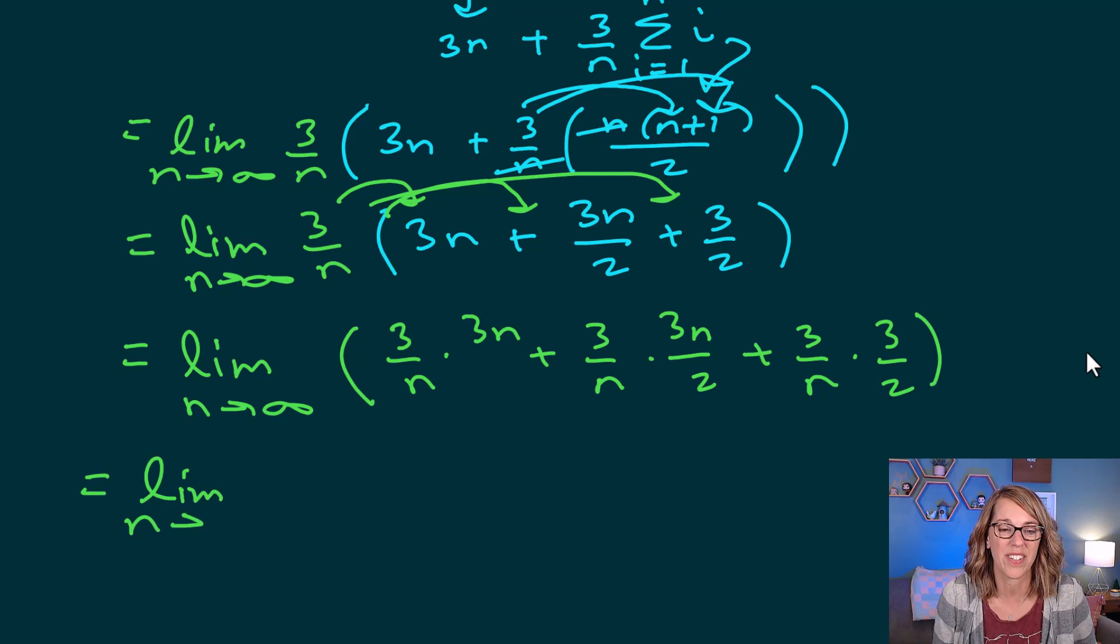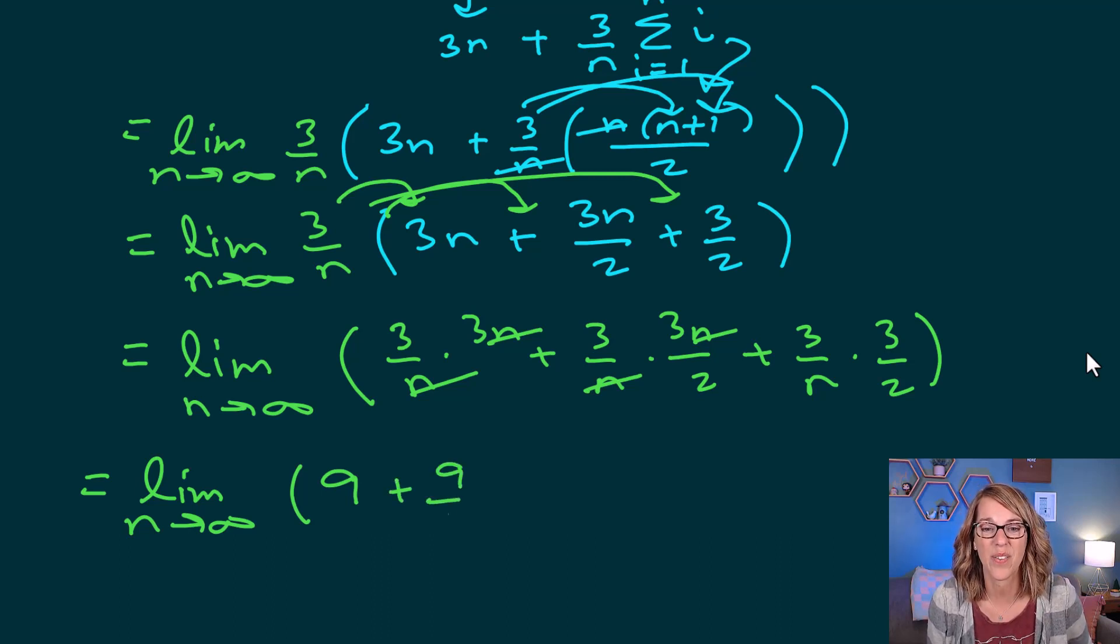I'm going to simplify what I can. Limit as n goes to infinity, and then the limit is going to be super easy to apply. I can cancel some n's here, and I get 9. In the second quantity, I get n's that cancel again, and I get 9 over 2. So plus 9 over 2. And then the last one, all I can do is multiply through and I get a 9 over 2n.